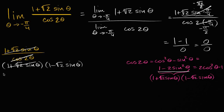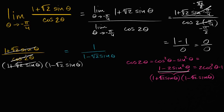Replacing cosine of two theta with one plus square root of two sine theta times one minus square root of two sine theta, we can cancel the one plus square root of two sine theta factor. We're left with one over one minus square root of two sine theta. To keep these expressions truly equivalent, we note this simplified form must also exclude theta equal to negative pi over four — and we can assume we're working in an open interval around that point.